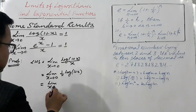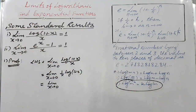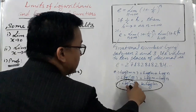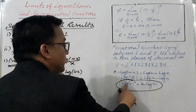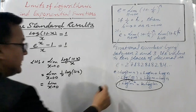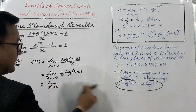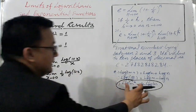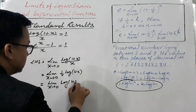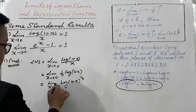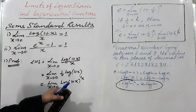Now I'm going to use the last logarithm property: log of m raised to power k equals k times log of m. Conversely, k times log of m can be written as log of m raised to power k. Exactly the same thing here - (1/x) is k and (1 + x) is m - so we can write this as log of (1 + x) raised to power (1/x), using this property.